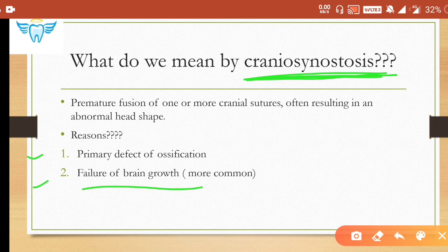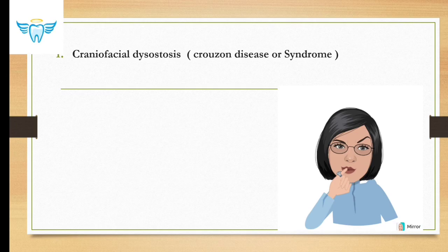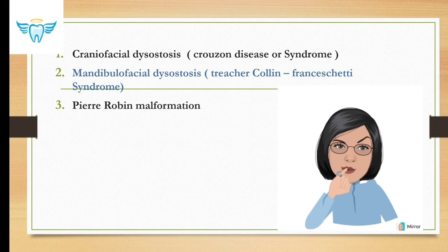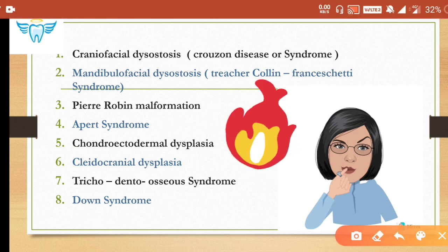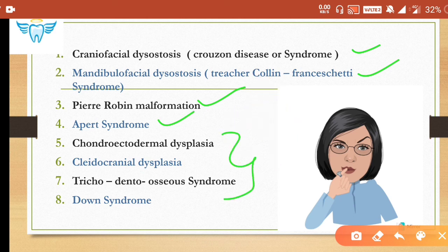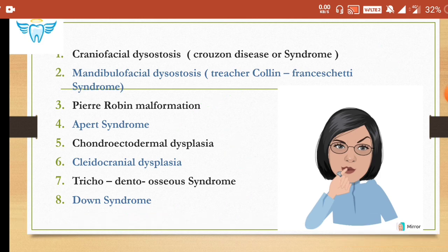The craniosynostosis syndromes are: craniofacial dysostosis, mandibulofacial dysostosis, Pierre Robin malformation, Apert syndrome, chondroectodermal dysplasia, cleidocranial dysplasia, trichodentoosseous syndrome, and Down syndrome. In this video we will cover four of these syndromes; Down syndrome has already been covered and a link is in the description.